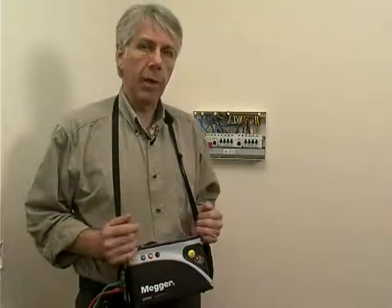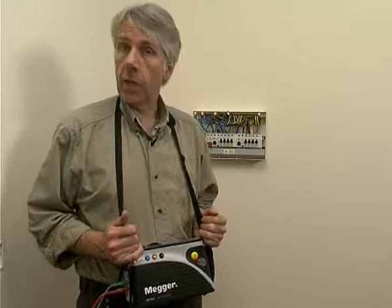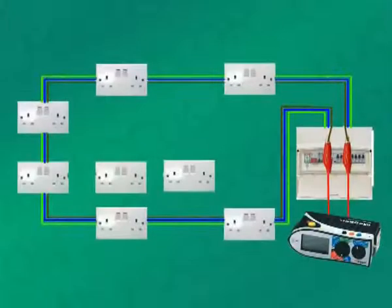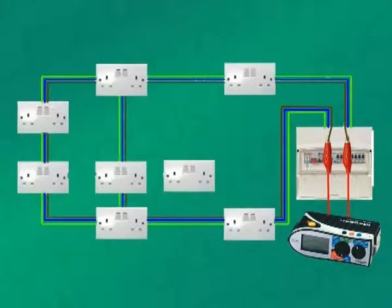We've explained the test procedure and what can cause readings to vary. The other thing we need to consider is when ring final circuits have bridges or interconnections and how this will affect readings. Here's our diagram of a normal ring final circuit. A bridge would be a connection which might do this, bridging from one side to the other, usually supplying one or more socket outlets on the way.